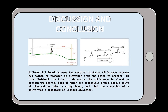As for discussion and conclusion, differential leveling uses the vertical distance difference between two points to transfer an elevation from one point to another. In this fieldwork, we tried to determine the difference in elevation between two points, both of which are accessible from a single point of observation using a level, and to find the elevation of a point from a benchmark of known elevation. A well-leveled ground should have the same elevation with respect to sea level.